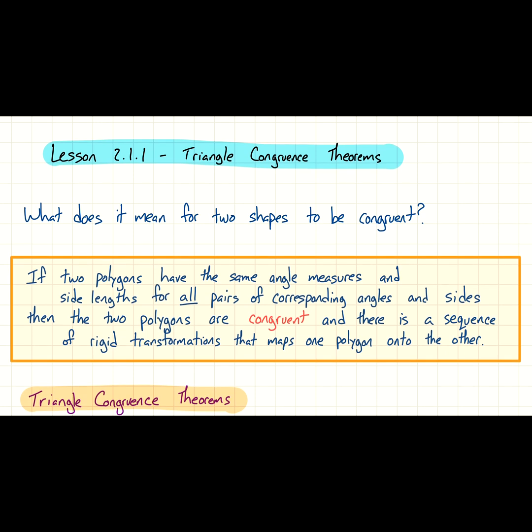Here's a longer definition that applies to two shapes. If two polygons have the same angle measures and side lengths for all pairs of corresponding angles and sides, then the corresponding angles are congruent and their sides are congruent, then the two polygons are congruent. So if their parts are congruent, then we could say that the two shapes are congruent.